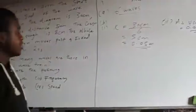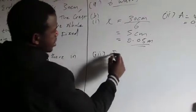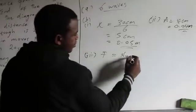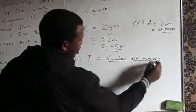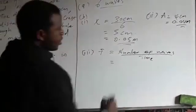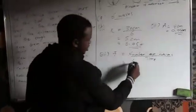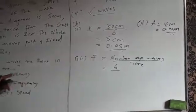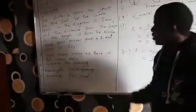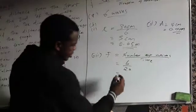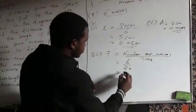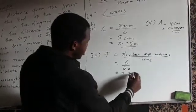Now let us calculate the frequency — roman numeral 3. Frequency is given by the formula: number of waves divided by time. My number of waves is 6. The whole wave train moves past the fixed point in 20 seconds, so frequency equals 6 divided by 20, which is 0.3.